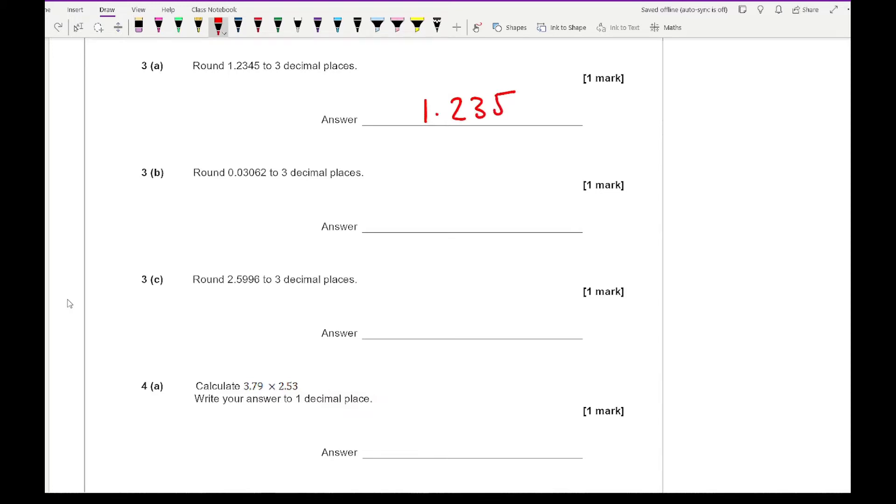For question 3B, round 0.030862 to 3 decimal places. The first 3 digits are 030, 6 is the next digit. That's bigger than 4, so I add 1 to the underlined number, making it 0.031. For question 3C, rounding this number to 3 decimal places gives 2.600.